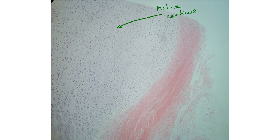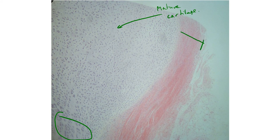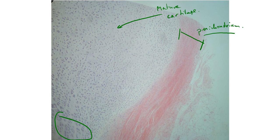The territorial matrix and interterritorial matrix are much more obvious in the younger cartilage. The perichondrium visible on the mature slide is very eosinophilic because it has much more collagen and less of the proteoglycan matrix — collagen is the dominant component there. In contrast, in the cartilage matrix, proteoglycans are the more common component, collagen is less abundant, and so basophilic staining is more prominent. That covers hyaline cartilage — two examples, one more mature and one less mature.